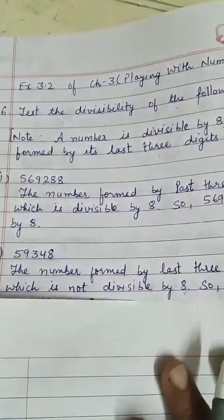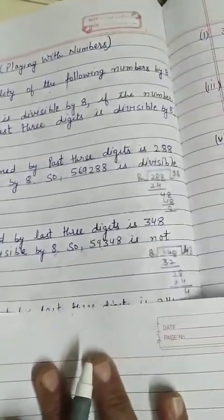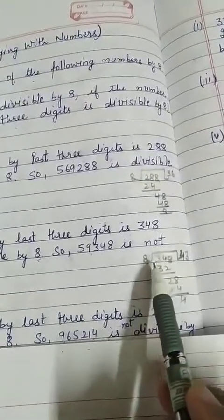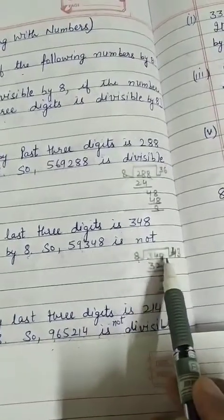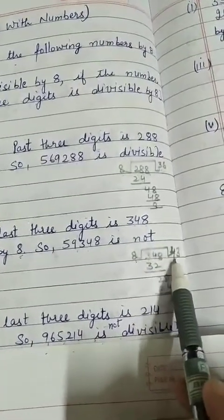Now, see that on my right side, in the rough work, I have divided 348 by 8. My quotient is 43, and the remainder is 4.